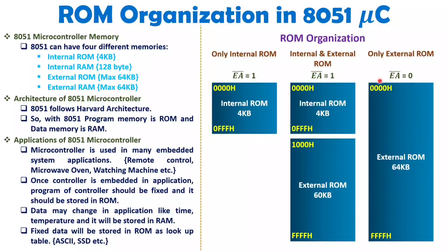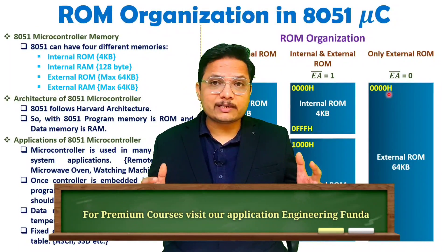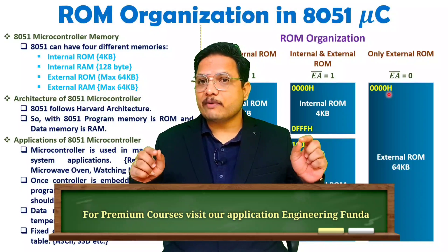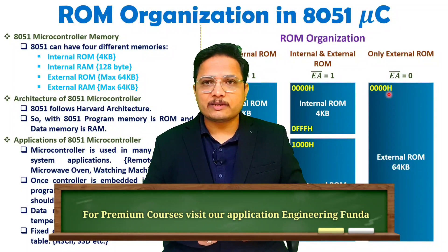Remember, when you keep EA bar equal to 1, your internal ROM is in use and it will have a fixed address — you cannot change this address. Only the external ROM address can be different and can be decided by the programmer. This is how the ROM structure works with 8051. If any confusion remains, please post it in the comment box. Thank you so much for watching this video.